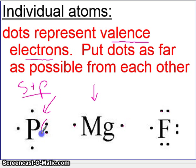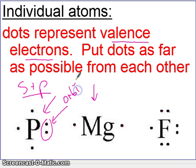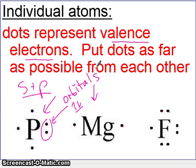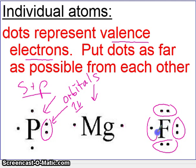You'll also see that we double them up. After you've put one around each side, you begin doubling them up, because these exist in orbitals. Each orbital has two electrons possible, and we first fill the orbitals with a single electron, and only then will they double up. There are four possible sides to every structure.